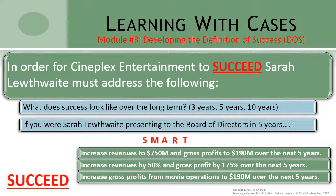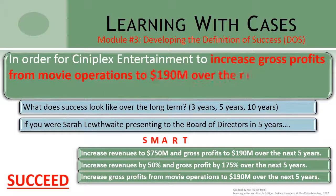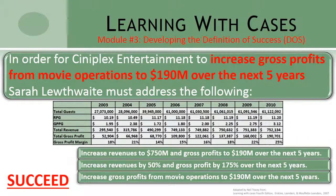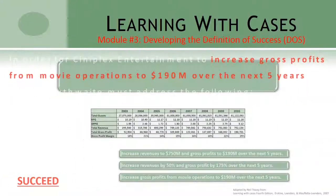In this particular case, there are a number of different ways in which we can do that. At the end of our analysis, we may define our success as increasing gross profits from movie operations to $190 million over the next five years. This is not the only possible definition of success for this particular case — it's merely one potential definition that meets our criteria of being SMART and moving the organization forward. It is also important to note that when you state your definition of success, you must be sure to support your objective by providing the rationale and logic you used in developing it. In this case, for example, I would include a table in my exhibits showing the previous trends in terms of revenues and gross profits, along with my forecast for the next five years. That brings us to the end of Module 3, Developing the Definition of Success.